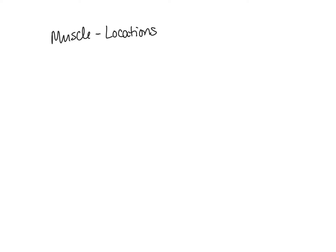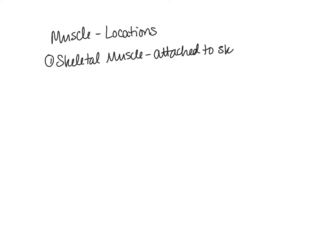Let's take a look at where each type of muscle tissue is located, starting with skeletal muscle. The name tells you where it's located — skeletal muscle is attached to your skeleton, which are your bones. It can also sometimes be attached to the skin; for example, when you make facial expressions like smiling, skeletal muscle pulls on the skin of your cheeks. So one end is always attached to a bone, but sometimes it's also attached to skin.